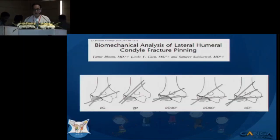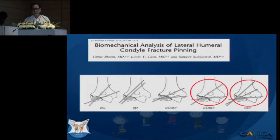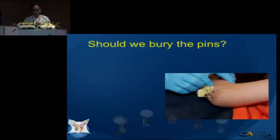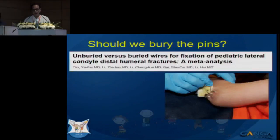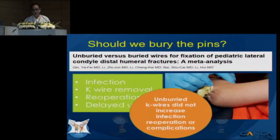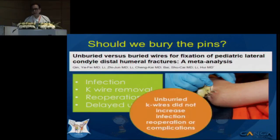Sabarwal and his group analyzed the best way to pin these fractures. They found that two divergent pins with maximum divergence of about 60 degrees, or three pins, provided the most stable construct, and this is what we should aim for. Regarding whether to bury the pins or leave them out, a study found that unburied pins did not have much impact on infection rate, re-operation rate, or complications — so leaving them out is the preferred method at the present time.